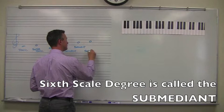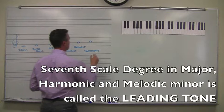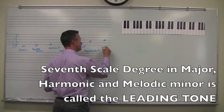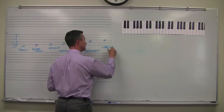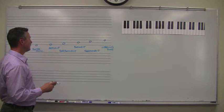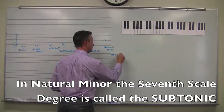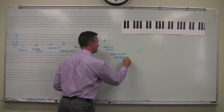The sixth scale degree, the submediant. The seventh scale degree is called the leading tone, or in the case of the natural minor, it is called the subtonic.